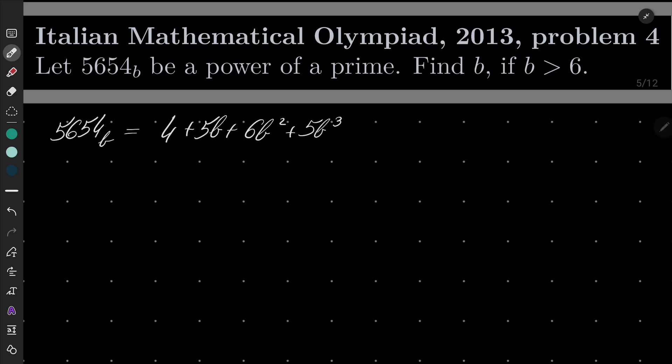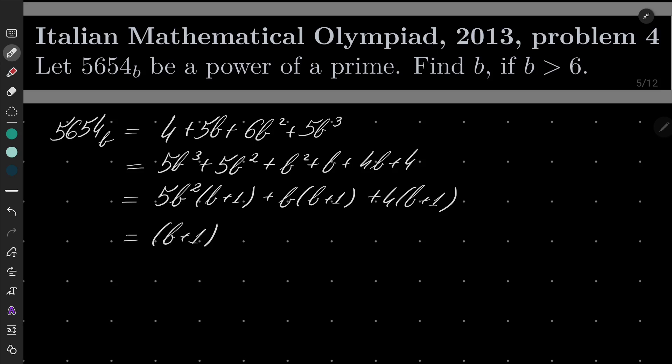We can easily guess one root. If we put B minus 1 we have zero, so we can divide by B plus 1. My favorite way is to write 5B³ + 5B² + B² + B + 4B + 4. I'll take out B plus 1 as a common factor, and we see B plus 1 times B² + B + 4.